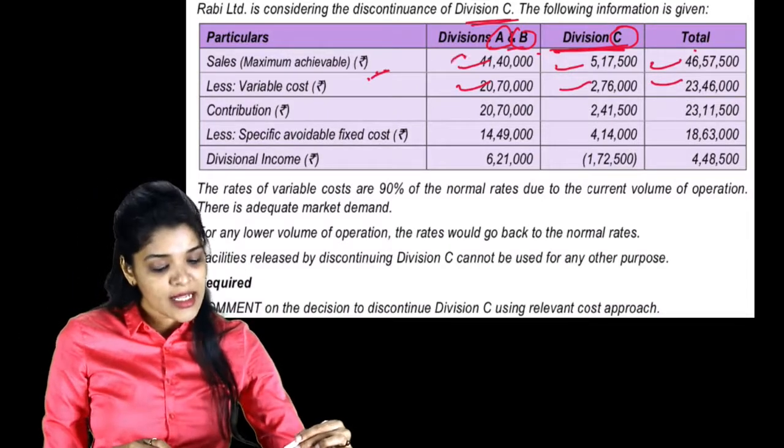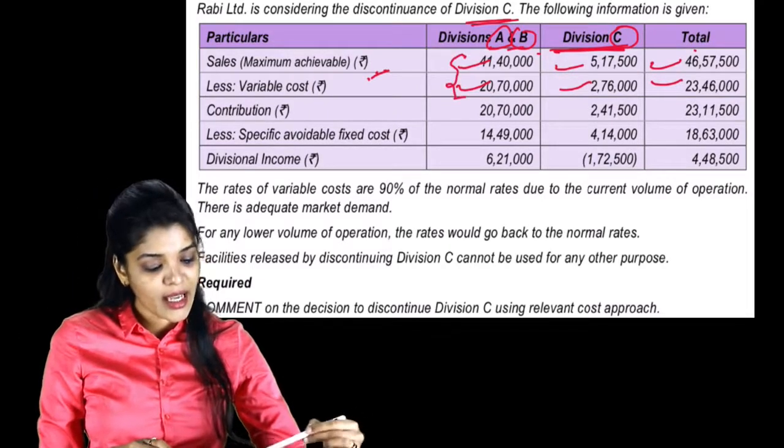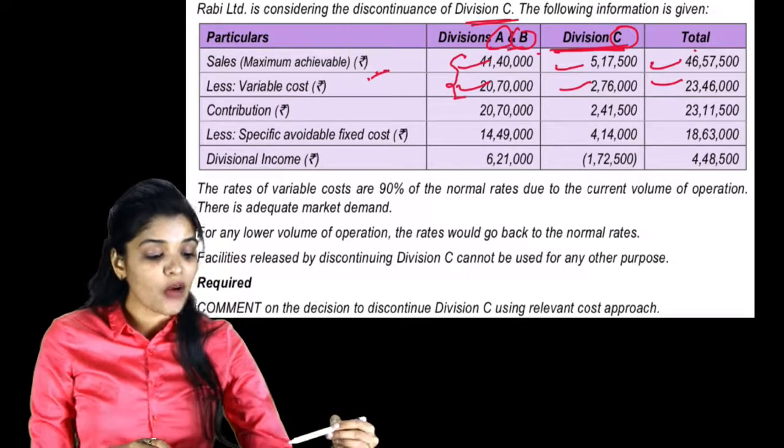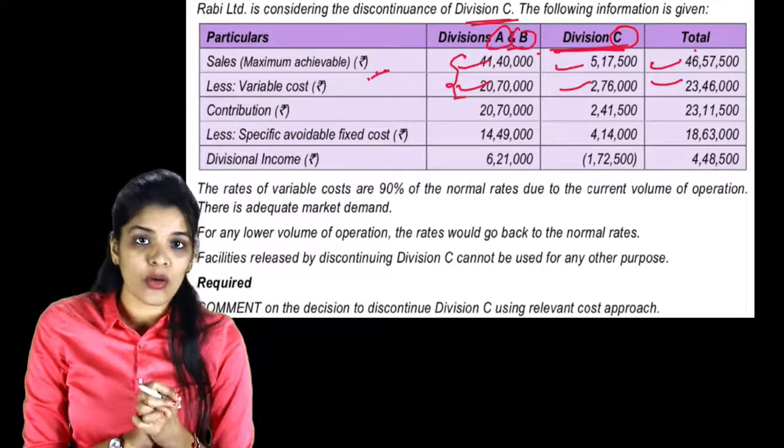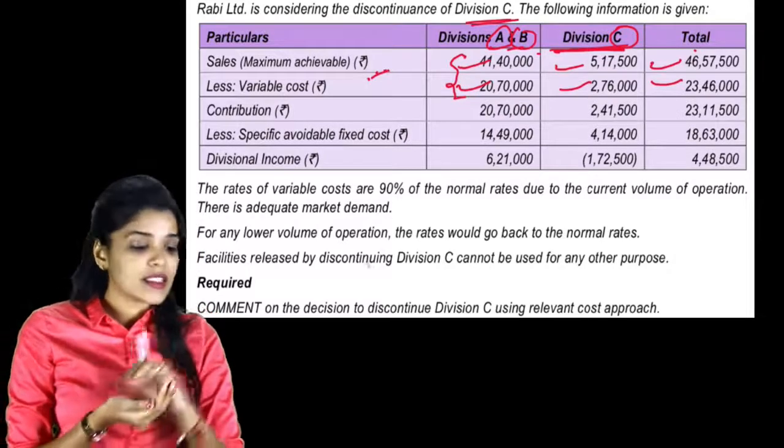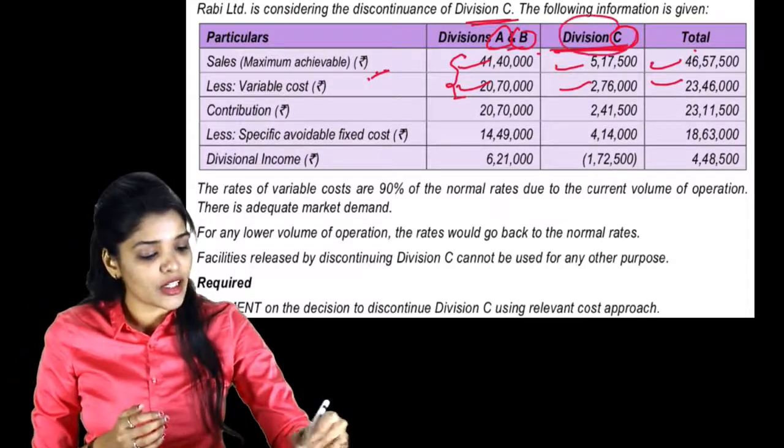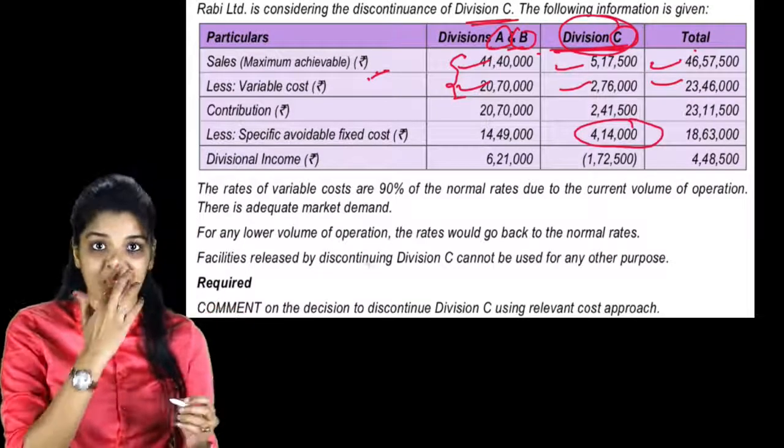Contribution - sales minus variable cost. Then less specific avoidable fixed cost. What are specific avoidable fixed costs? If Division C discontinues, then its fixed cost will also not be incurred.